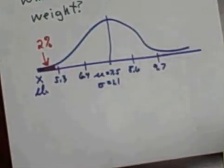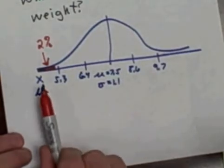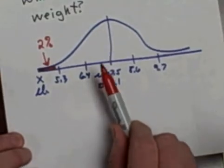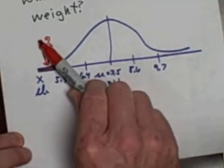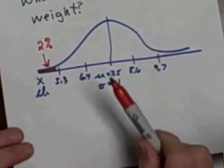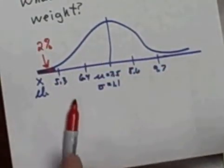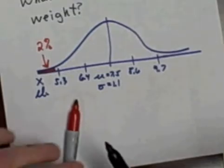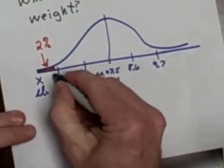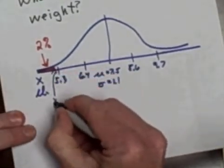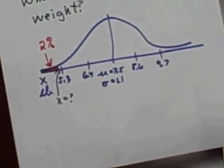Okay so please understand we're working this problem backwards instead of being given an x-value and told to convert it to a probability or to a percent. We're starting with a percent and we're asked to find out what is the cutoff weight, that is what is the x-value of this boundary line. That's the question. Do you see that we're working this problem backwards this time?